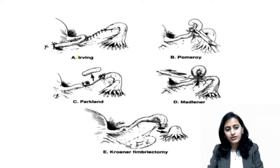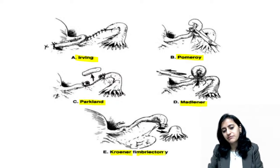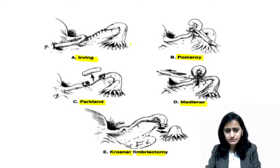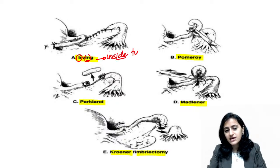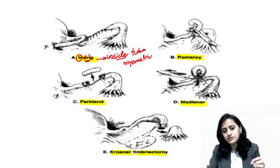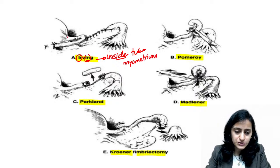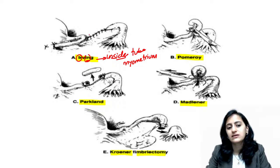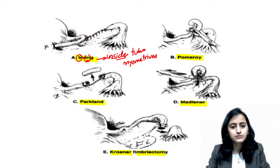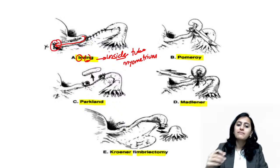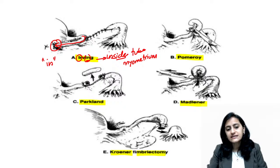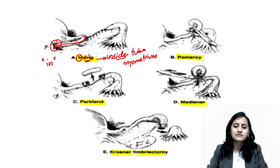The techniques include Irving, Pomeroy, Parkland, Madlener's, and Criner's fimbrectomy. For the Irving technique, remember: Irving is 'inside' — you take the tube inside the myometrium. After the incision, the medial end of the tube is placed into a myometrial tunnel. Irving is inside, towards the myometrium.